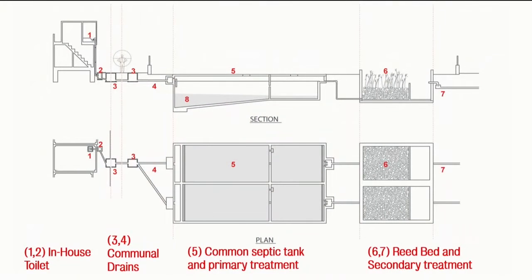The final project had four components: in-house toilets, which was to be a resident-led investment; serviced by communal drains; a communal septic tank; and then a reedbed upflow filter, which catered for about 2,000 people.